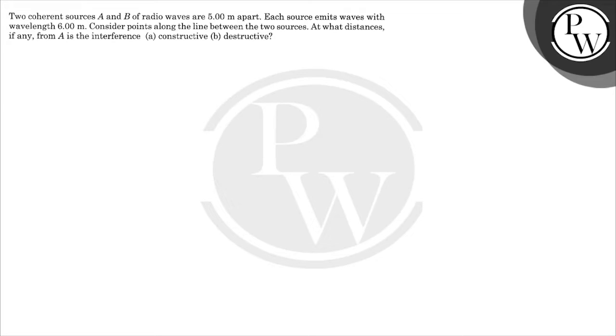Hello virtual execution. Two coherent sources A and B of radio waves are 5 meters apart. Each source emits waves with wavelength 6. Consider the points along the line between the two sources. At what distance, if any, from A is interference constructive and destructive?